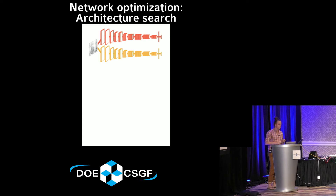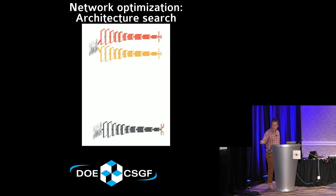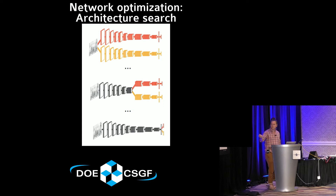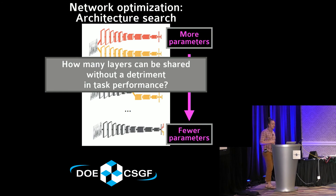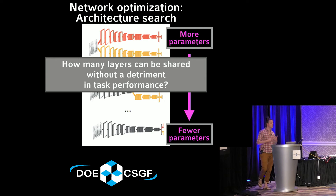We enumerated all possible amounts of processing shared across the two tasks. On one extreme, no processing is shared — you have one stream for word and one for genre. On the other extreme, nearly all processing is shared up until the final stage, where word classification and genre classification diverge. We can also imagine something in between, sharing about half the processing before branching. The fully separate model has basically twice as many parameters as the fully shared model.